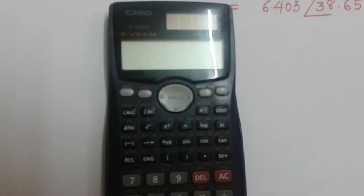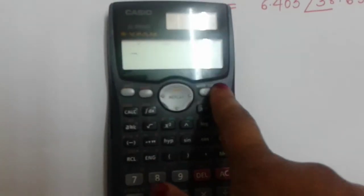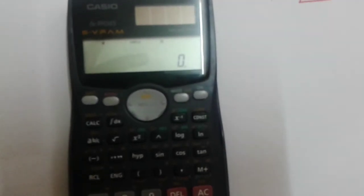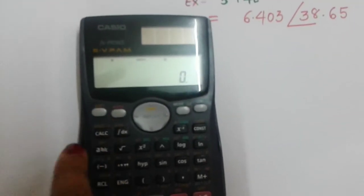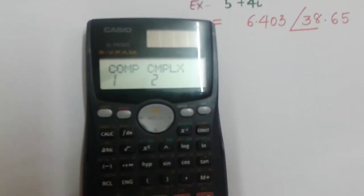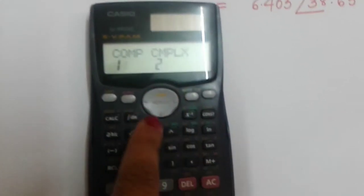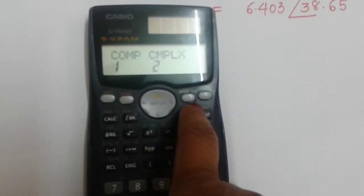You have to first turn on the calculator. Here the ON button is there. If you press ON, you will get zero. Then after that, you have to select which mode you want. There is a MODE button beside the ON button.